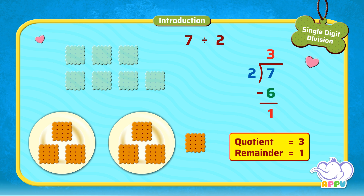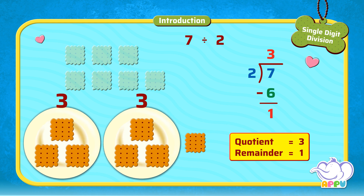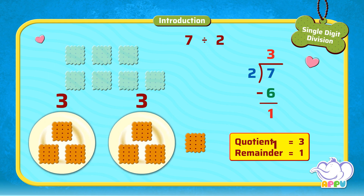3 is called the quotient and 1 is called the remainder. This means that when we divide 7 biscuits into 2 plates, we get 3 biscuits in each plate and 1 is left out, which is the remainder.